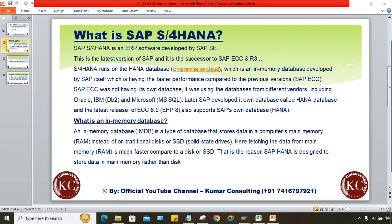ECC was not having its own database — it was using databases from different vendors including IBM, Oracle, and Microsoft. Later on, SAP developed its own database called HANA. Even ECC 6.0 EHP 8 supports the HANA database. So the difference is: S4HANA has its own database, whereas ECC was using third-party databases from different vendors.